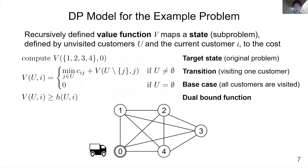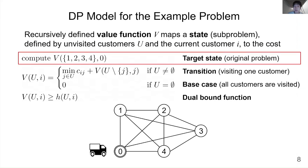Formally, a DP model is defined by a value function v which maps a state or sub-problem to its cost. In our example, a state is defined by two variables u and i. u represents the set of unvisited customers; i represents the current customer. In the original problem, u is equal to {1, 2, 3, 4} because all customers except the depot are unvisited, and i is equal to 0 because the vehicle is at the depot. This state is called the target state. The objective of the DP model is to compute the cost of the target state, which corresponds to the cost of the original problem.